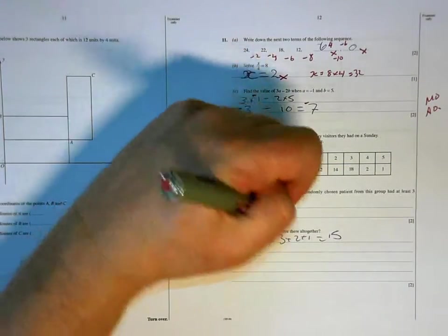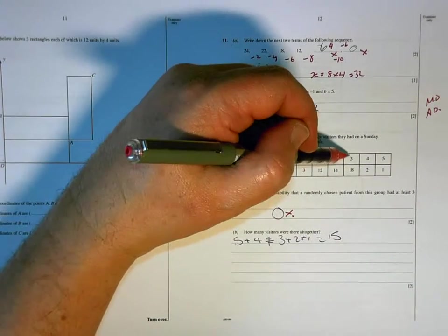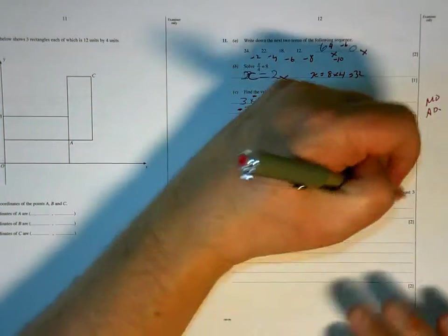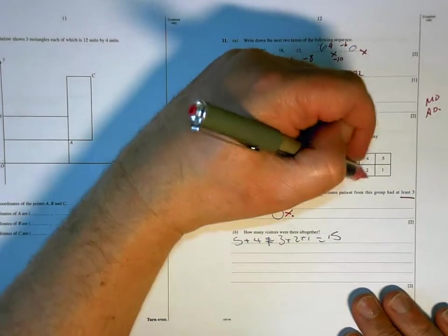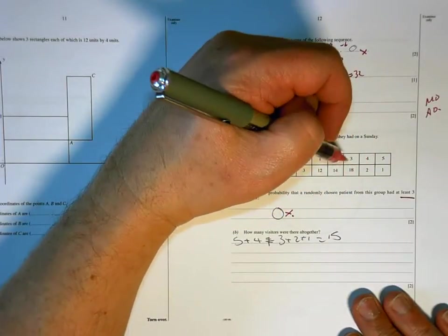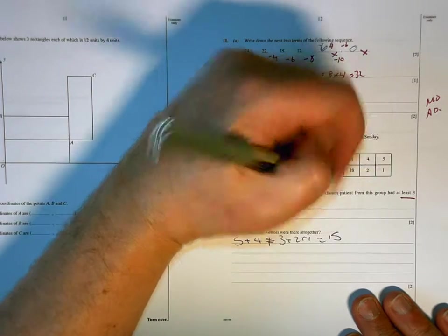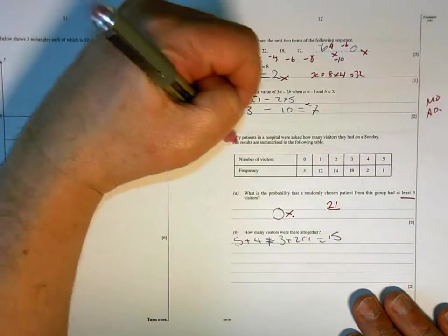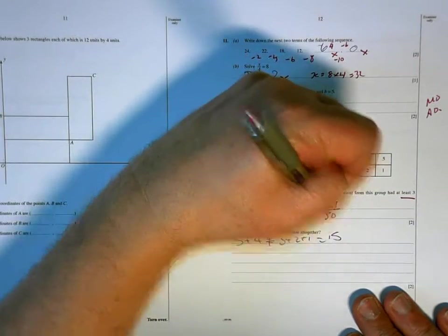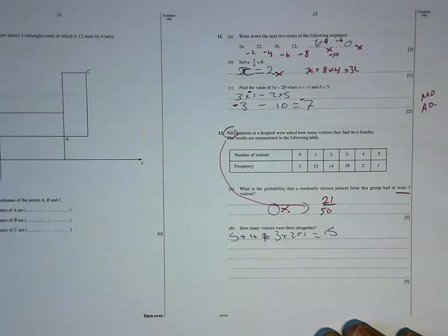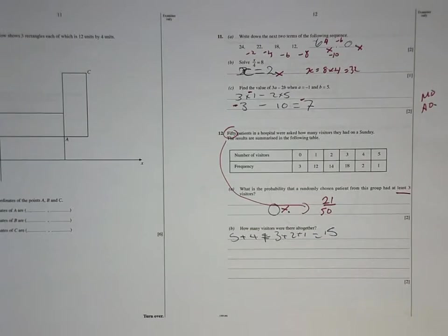At least 3 visitors. No, 3 visitors. 18 people had exactly 3. But another 3 people had more than 3. So, at least 3 would be 21 out of the 50 patients that are in the hospital.